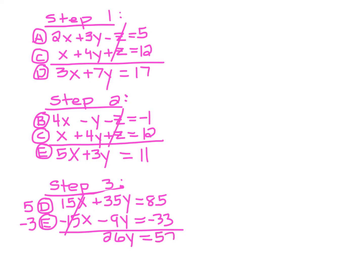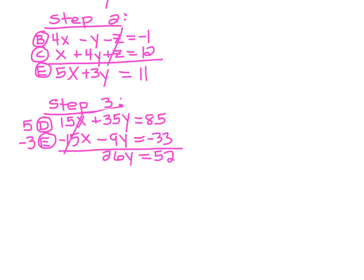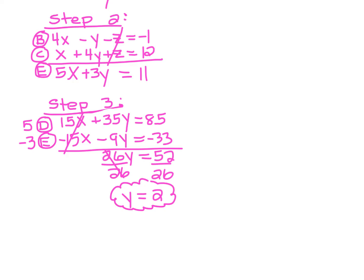Look at this — we now have an equation with just one variable: 26Y equals 52. We can solve this equation. Divide both sides by 26 and we get Y equals 2. We've solved for our first variable. Usually once we get to step 3, we've solved for the first variable. In step 4 we'll solve for the second, and in step 5 we'll solve for the third.